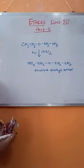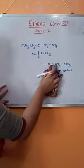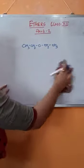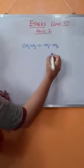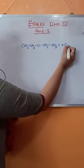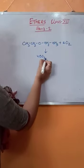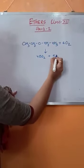The next reaction under this category is combustion. Ether burns in presence of air to give carbon dioxide and water.